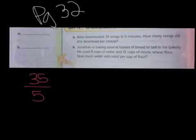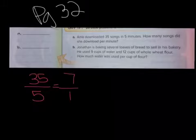Is the second number a factor of the first number? It is. Can we divide? Yes, we can. When we divide, we get seven over one. Correct? So she was able to download seven songs per minute.